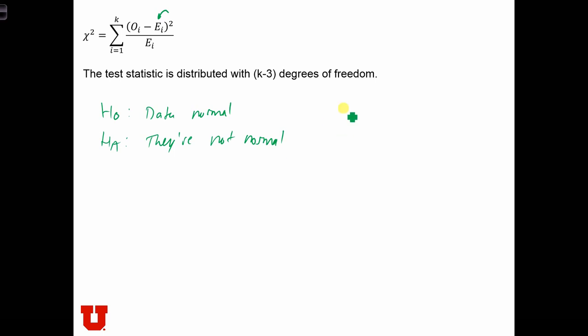We're going to use a chi-squared statistic with k minus 3 degrees of freedom. Now, normally we only have k minus 1 degrees of freedom, but we are going to take away two more degrees of freedom when we're doing this normal case.